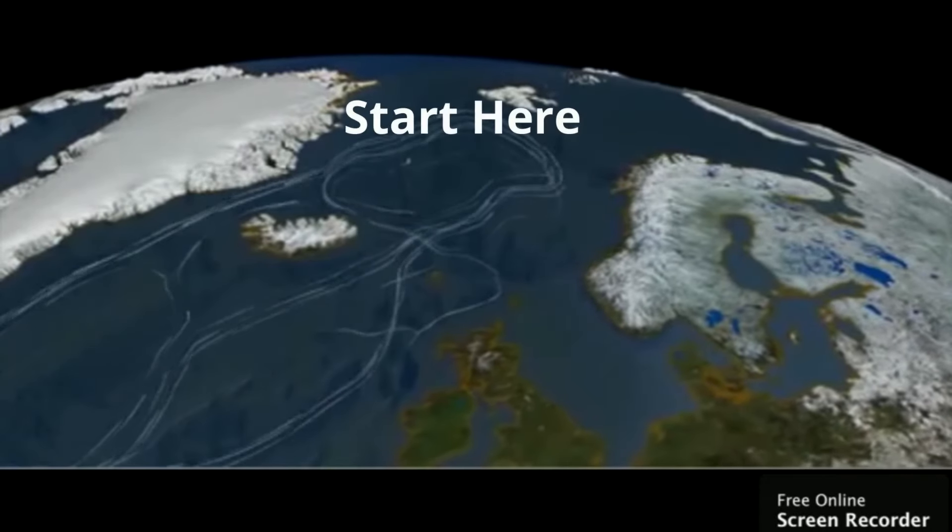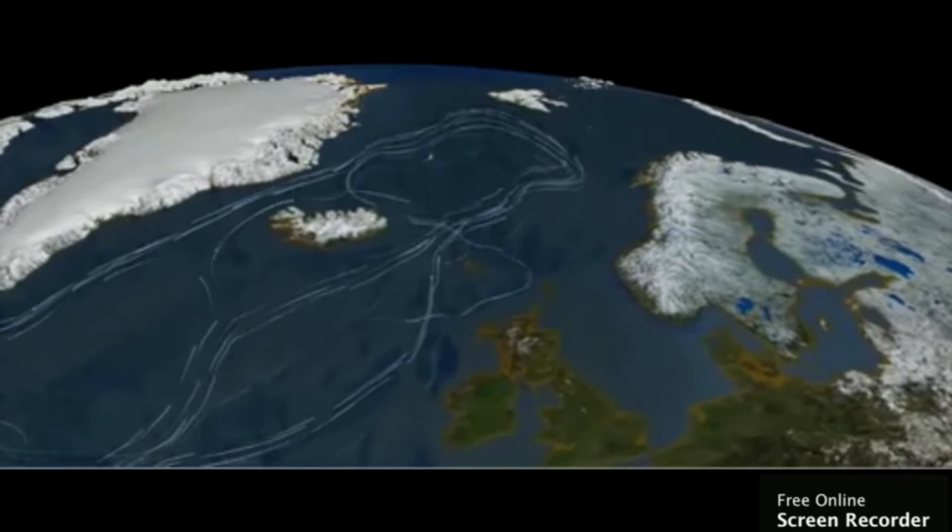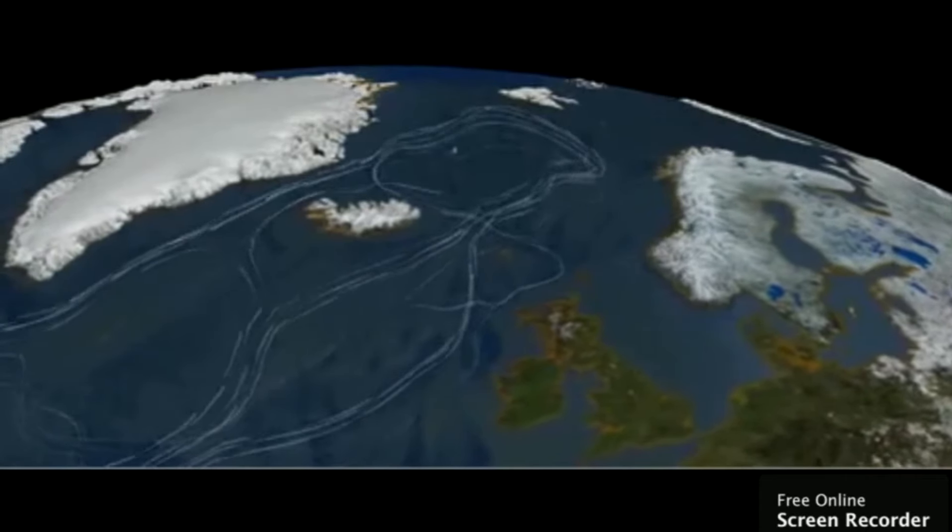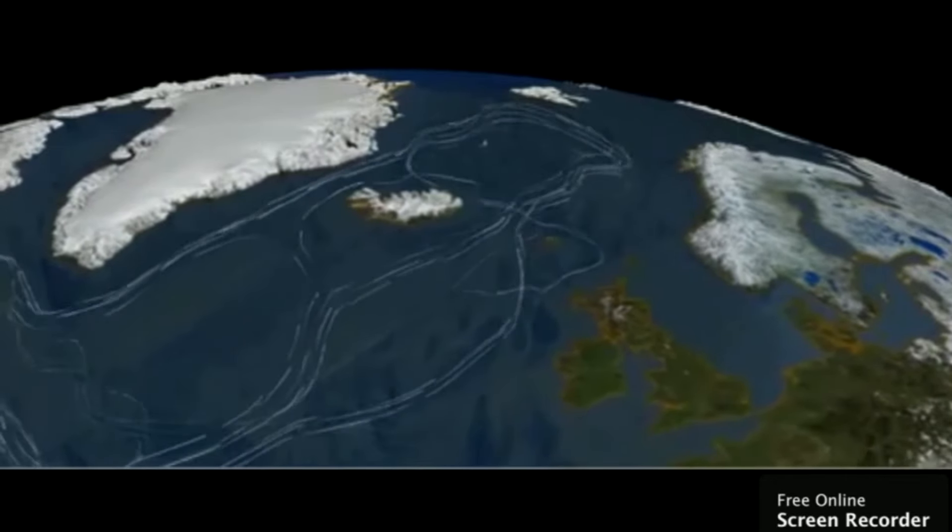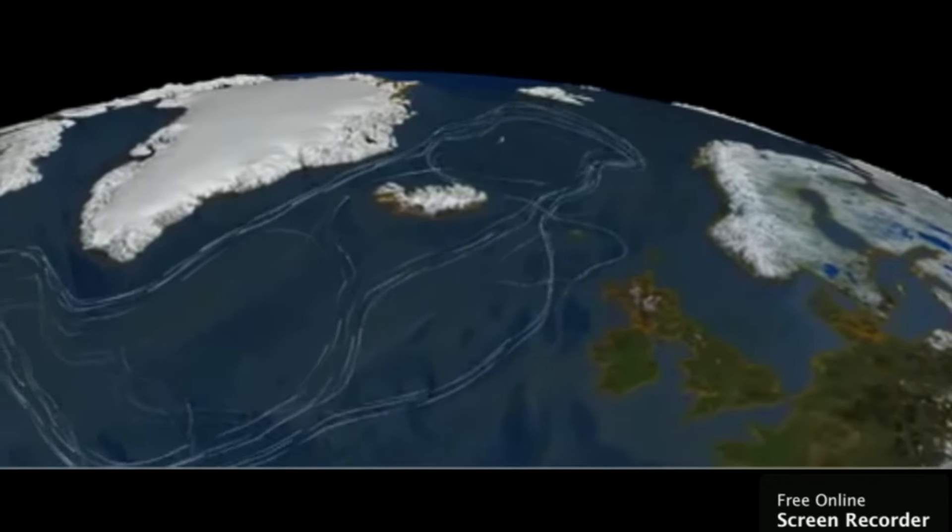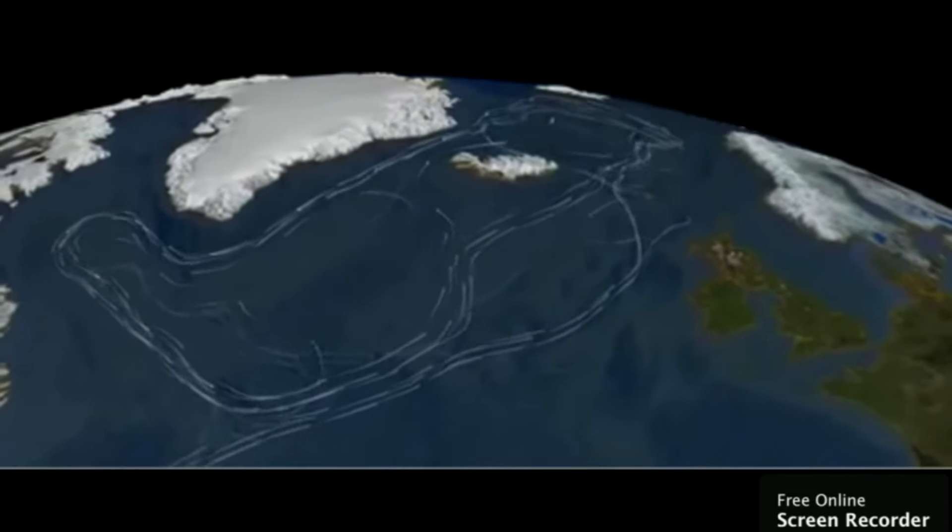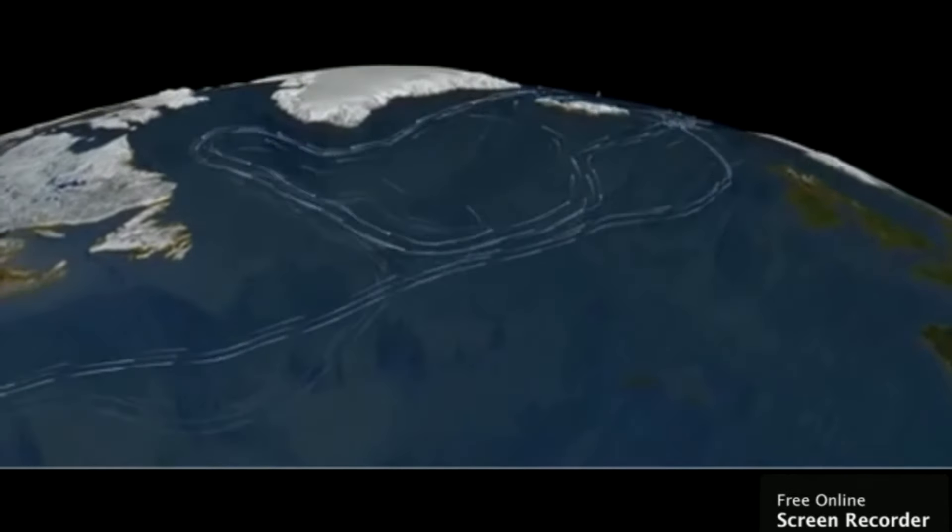The conveyor belt begins on the surface of the ocean near the pole in North Atlantic. Here the water is chilled by the Arctic temperature. It also gets saltier because when ice forms in the ocean, the salt does not freeze and is left behind in the surrounding water. The cold water is now more dense due to the increased salinity and temperature and sinks towards the ocean bottom.